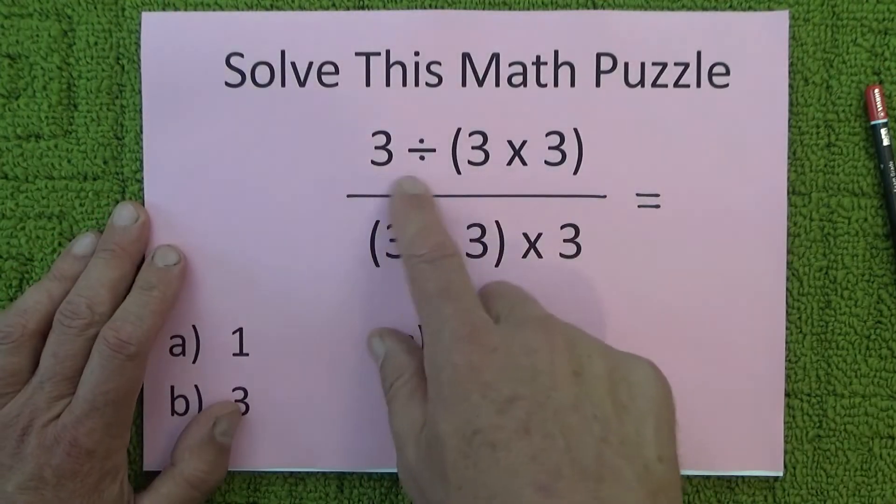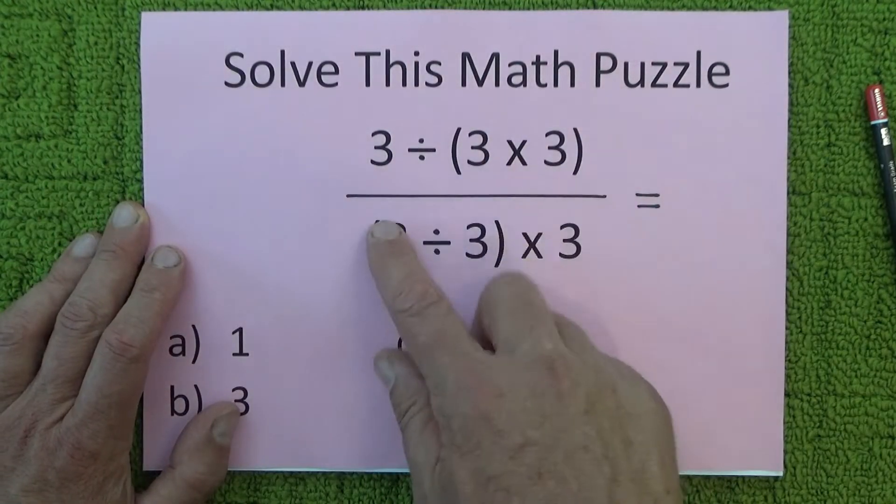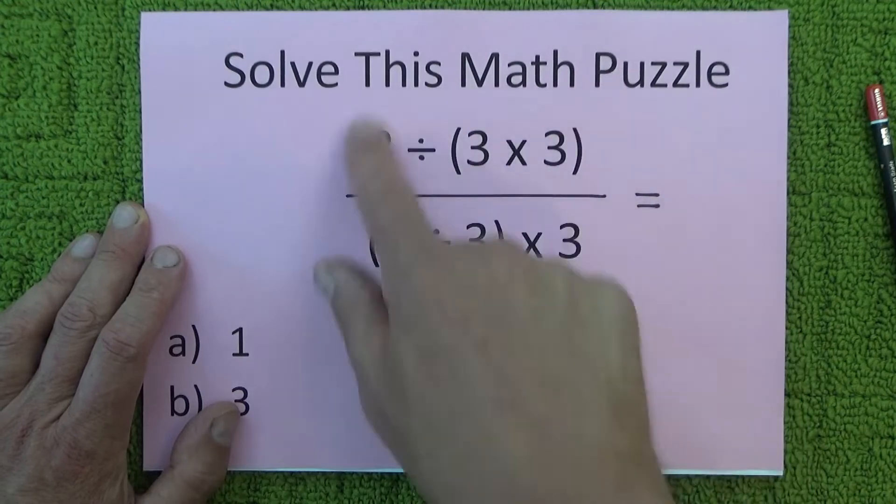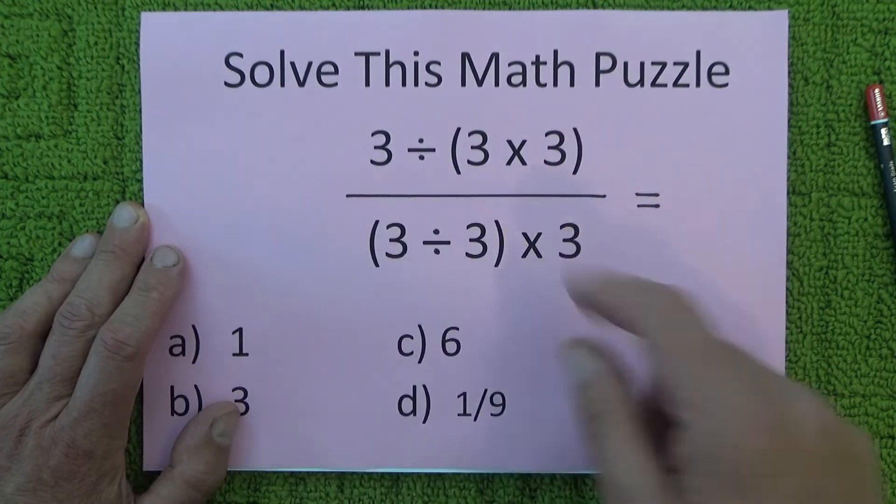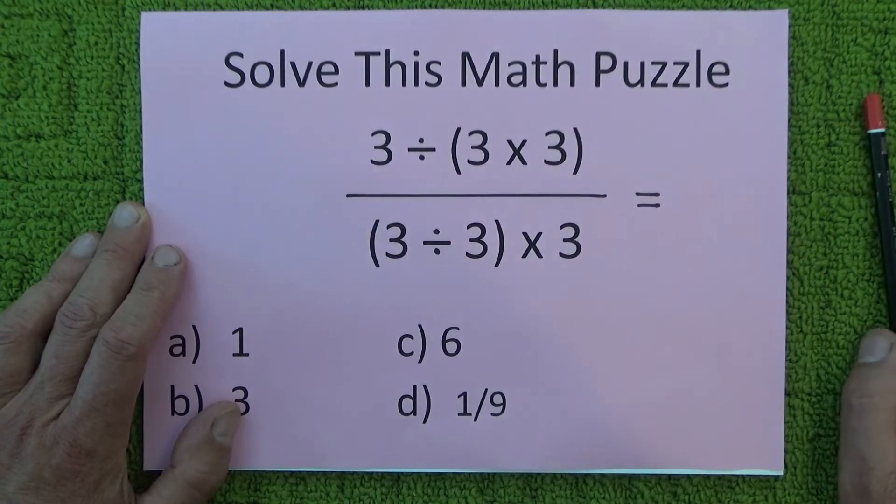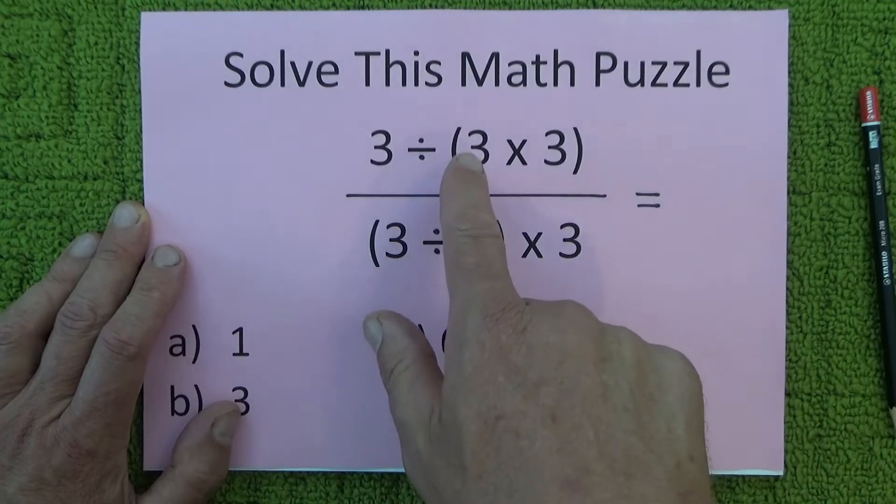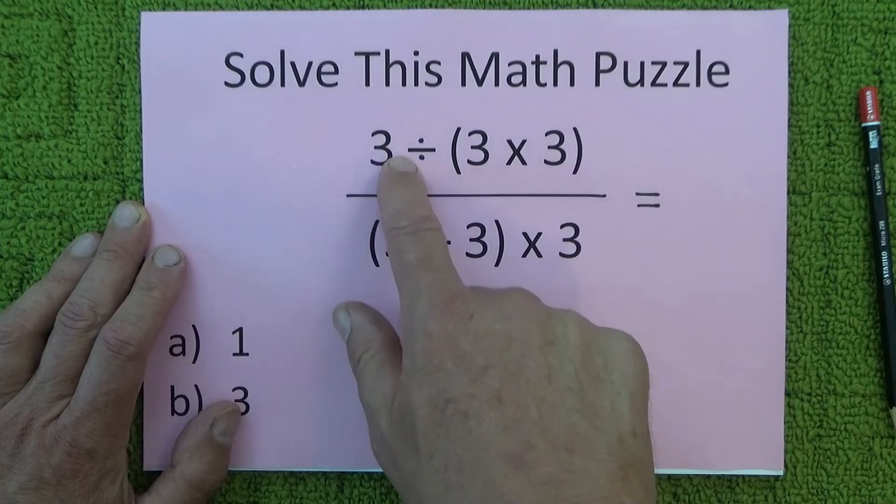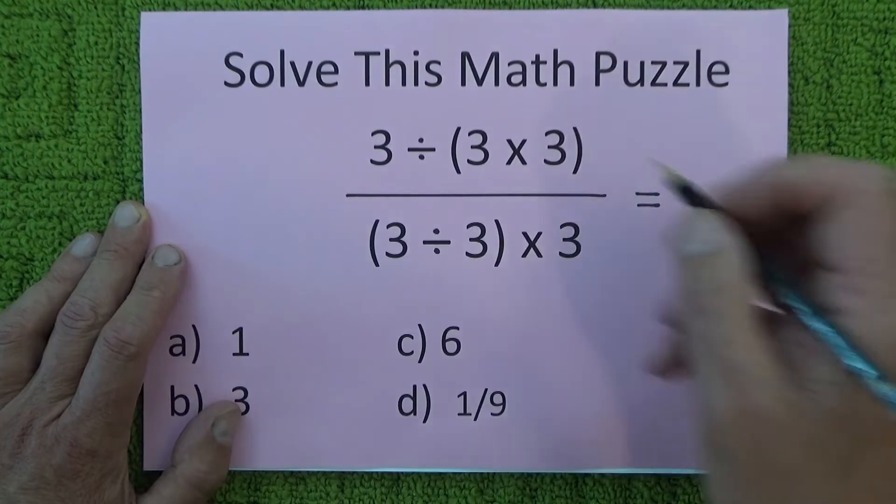Okay, so to work out this puzzle we've got to do everything that's in brackets first. We'll do the top section first and then move down to the bottom section of the fraction. So it's 3 times 3 which is 9, so it's 3 divided by 9.